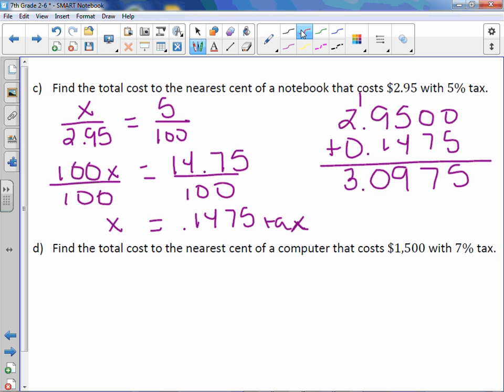We are rounding to the nearest cent, which would be this number here. Find your place, look next door, 5 or greater, add one more. 9 plus 1 is 10. So $3.10 is our total cost.